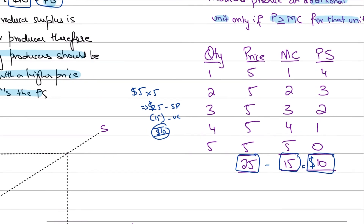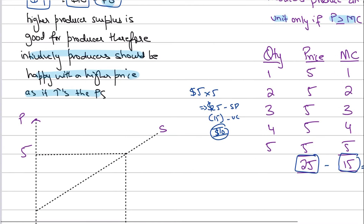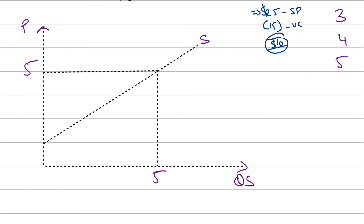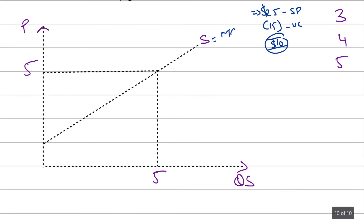We can also represent this graphically. The supply curve is upward sloping, and the area below the price and above the supply curve represents producer surplus. Since this video uses the marginal cost approach, the supply curve is also your marginal cost curve — each point on the supply curve represents the marginal cost of that particular unit. Producing five units at five dollars each, the total revenue is shown by the full rectangular box.